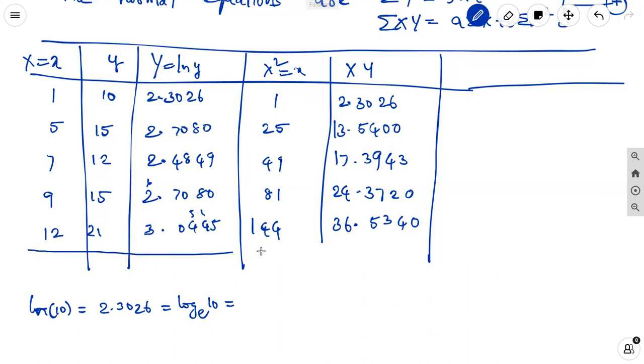Now we can find out the summation using the calculator. Sigma x equal to 34. Sigma y is equal to 13.248 by using the calculator. Sigma x squared equal to 300. Sigma xy is equal to 94.1429. These values substitute in the equation 4.